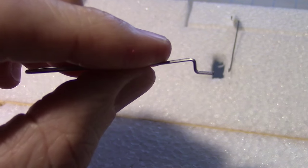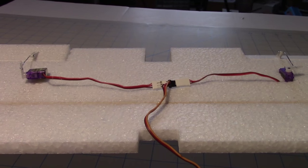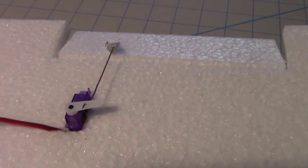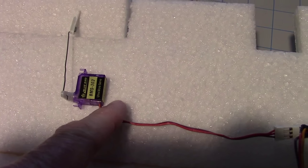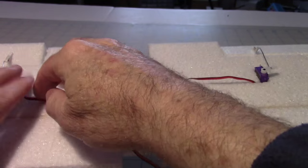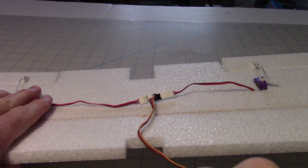To compensate for the servos going opposite directions, I mounted one embedded into the wing this way, and the other flat. I'll hot melt these once I get them in position. You can see they go opposite directions.